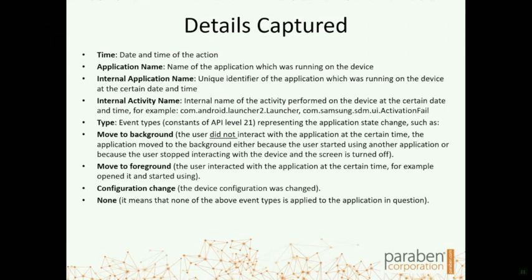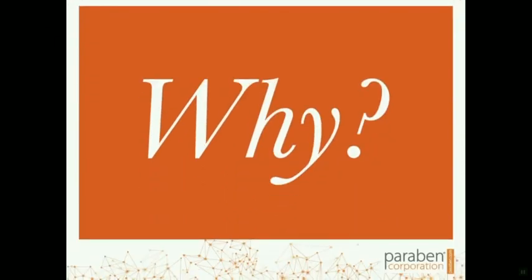Here are the details captured in the activity timeline: the date and time of the action down to the second, the application name that was actually running on the device, the internal application name, the internal activity name, and the type. We also see 'move to background' where the user did not interact with the application, 'move to foreground' where the user did interact, configuration changes, and a category of 'none' when information was not available for that particular activity.